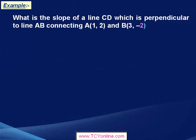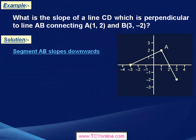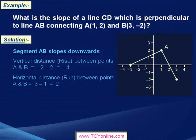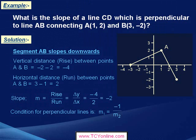Now, let's look at this example. Here, we need to find the slope of line CD, which is perpendicular to line AB. Now, look at the figure given on the right. From this, we conclude that segment AB slopes downward. So find the vertical distance — that is rise — between points A and B, which is simply negative 2 minus 2, which equals negative 4, while the horizontal distance equals 2. So that means slope of line AB is equals to negative 4 over 2, which is simply negative 2.